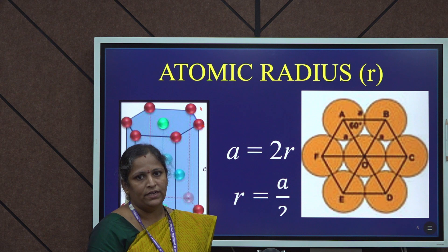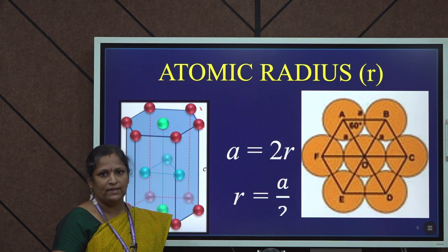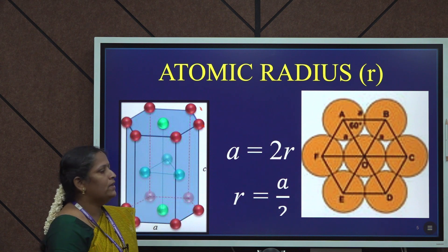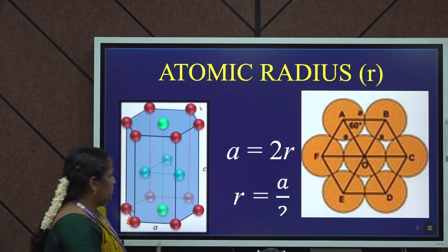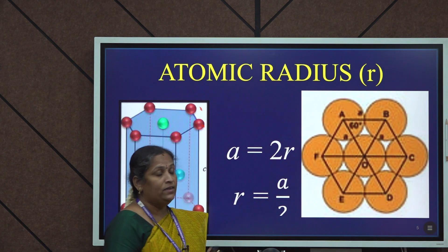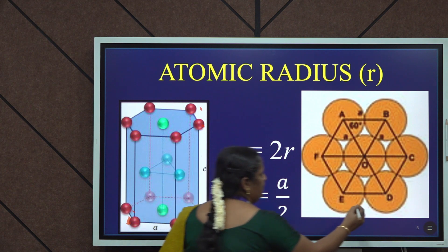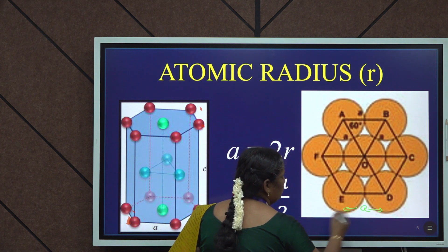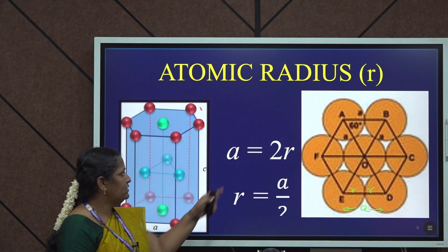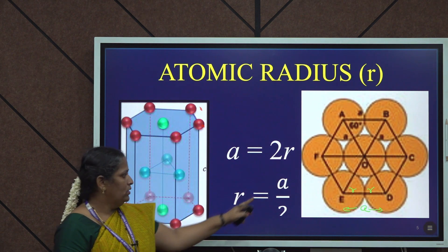Next, let us calculate the atomic radius in a HCP lattice. We will express the atomic radius R in terms of A, where A is the distance between neighboring atoms. Considering a single hexagonal plane of the HCP structure, all the corner atoms touch each other. If A is the distance between two corner atoms and R is the atomic radius, we have the relation A = 2R, meaning R = A/2.